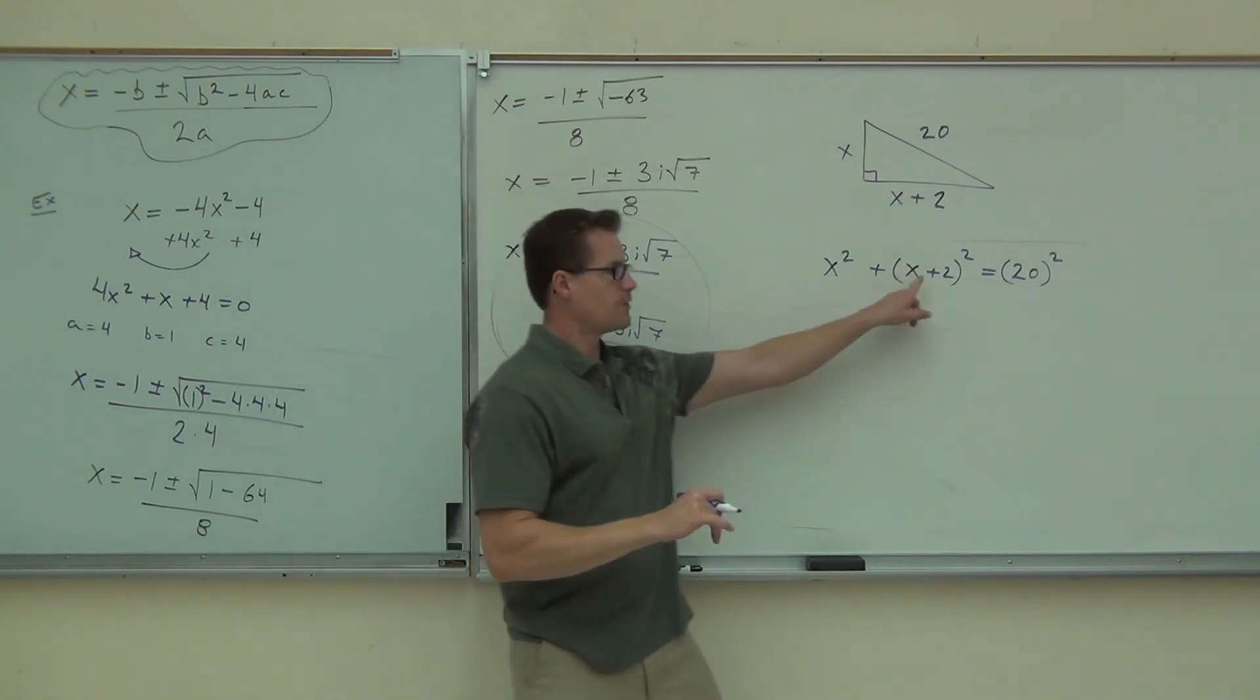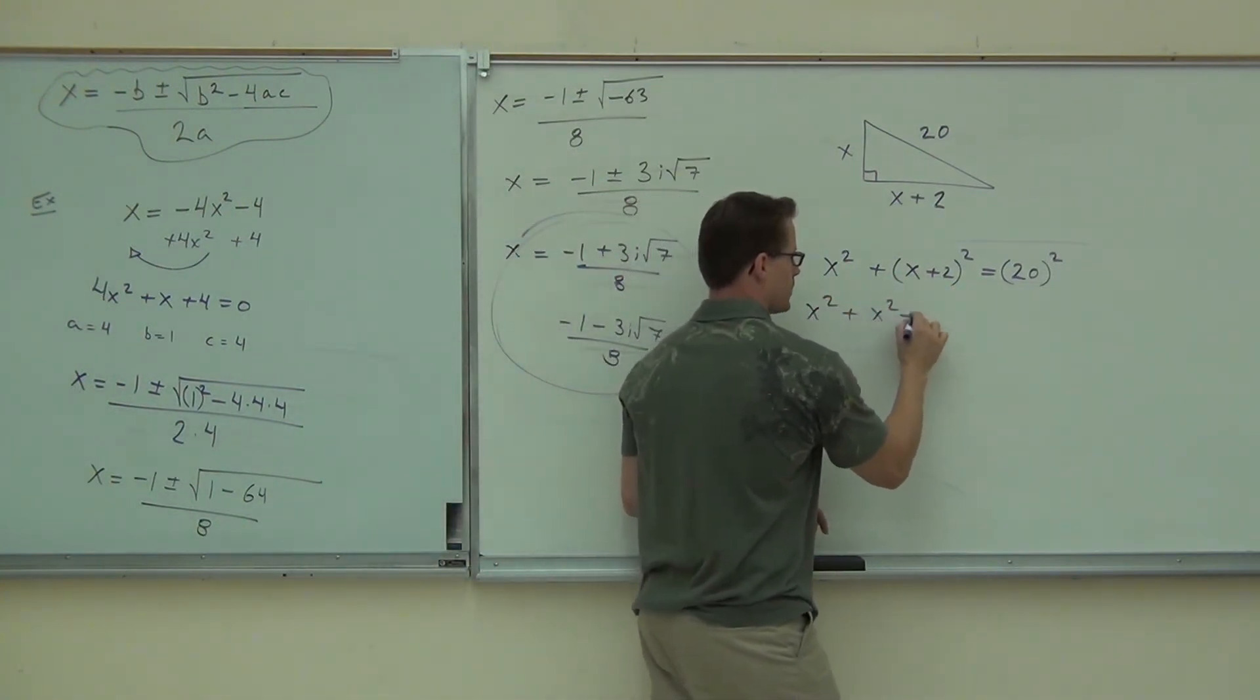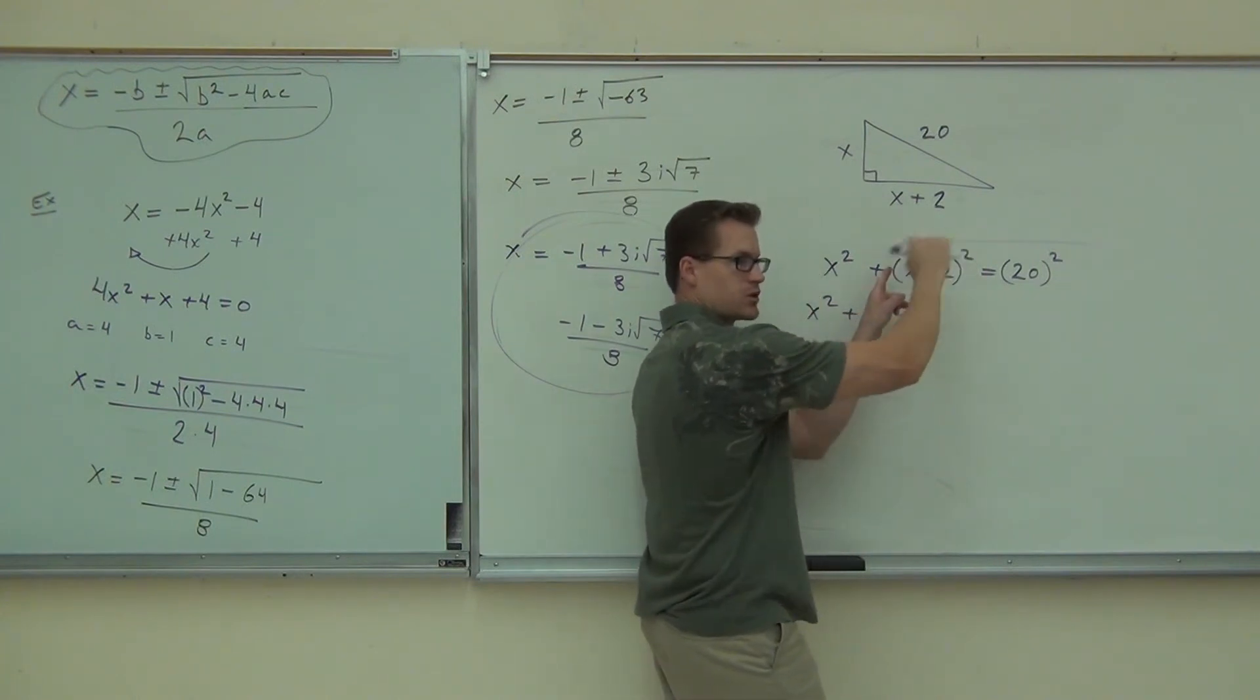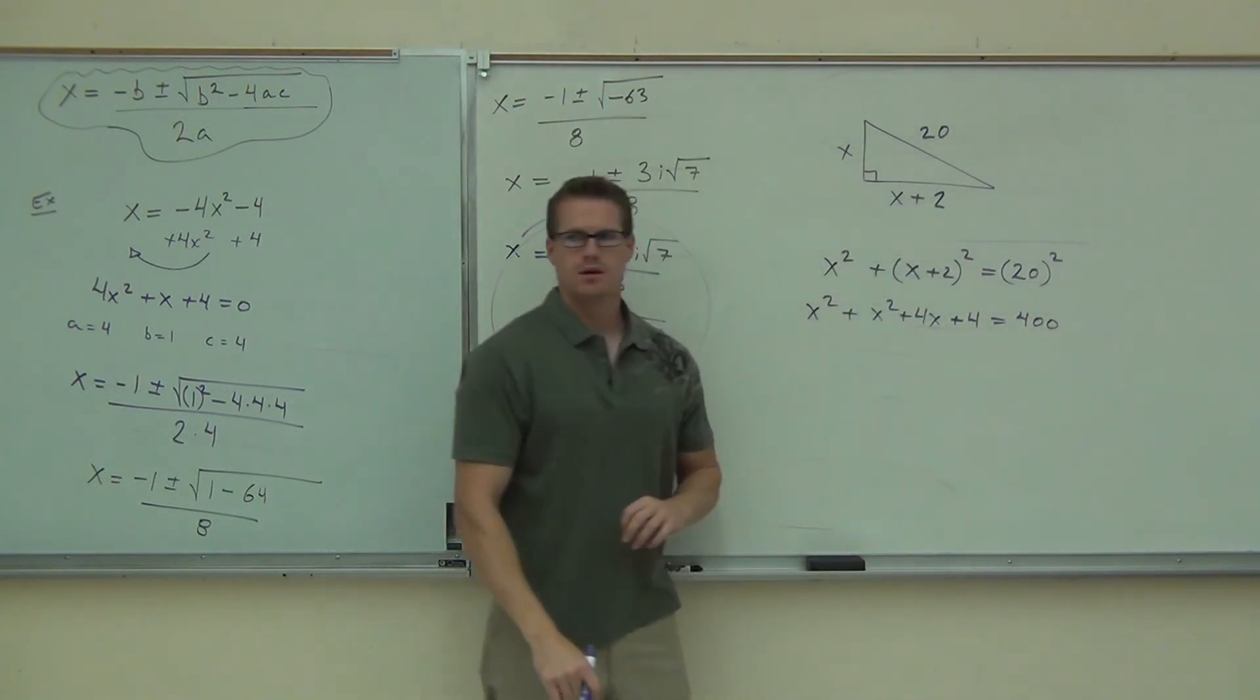Do the FOIL method on X plus 2. FOIL that, sure. X squared plus X squared plus 4X. Notice the middle terms you're going to FOIL. Plus 4 equals 400. What now?